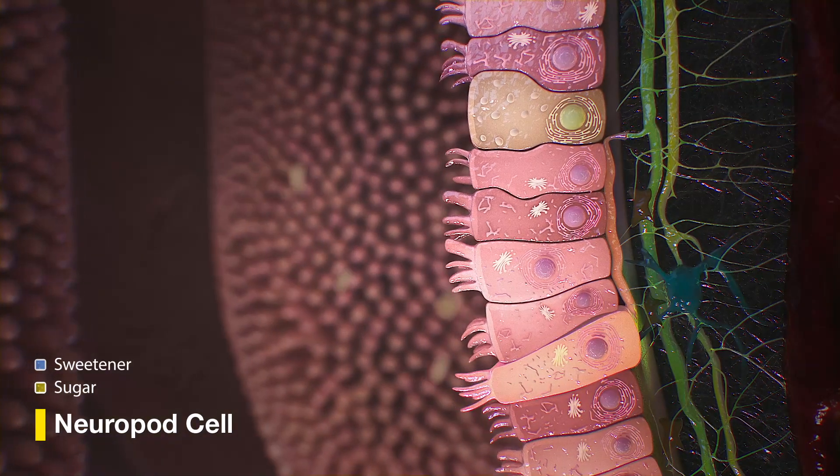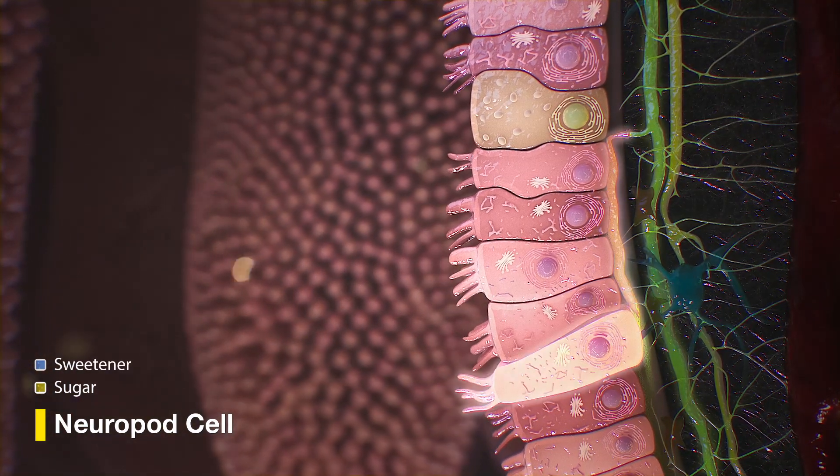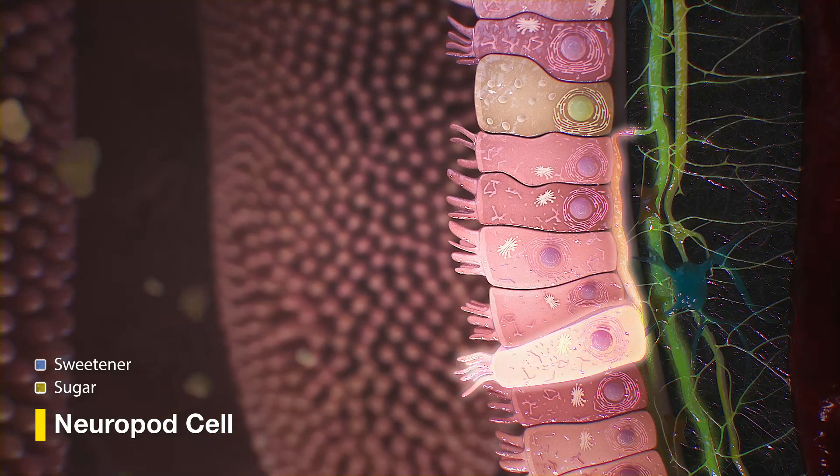As such, neuropod cells convey signals from sweeteners using ATP and from sugars using glutamate.